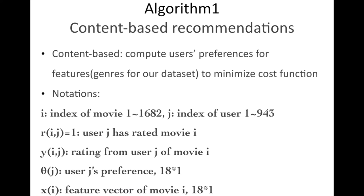Now let's look at the algorithms. The first algorithm is called content-based recommendation. It computes users' preference of features, which is the genres of the movies in our example, and then it minimizes the cost function to make predictions. Here are some notations.